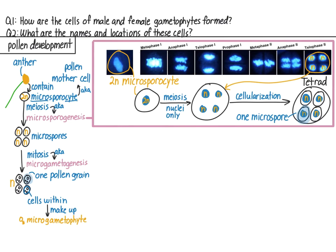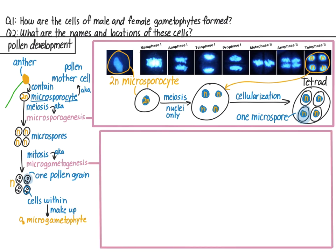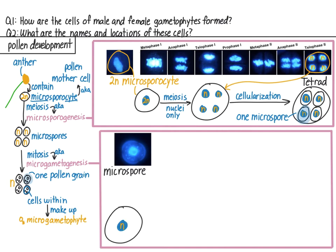Next, we'll examine the details of gametogenesis. The cell wall containing the microspores is broken down, and each individual microspore now enters gametogenesis. Here's one microspore, also stained with DAPI, and here's a drawing. The microspore is basically an immature pollen grain. But unlike later developmental stages of pollen, the microspore is made of only one cell. So the microspore is also called monocellular pollen. The nucleus of the microspore is haploid.